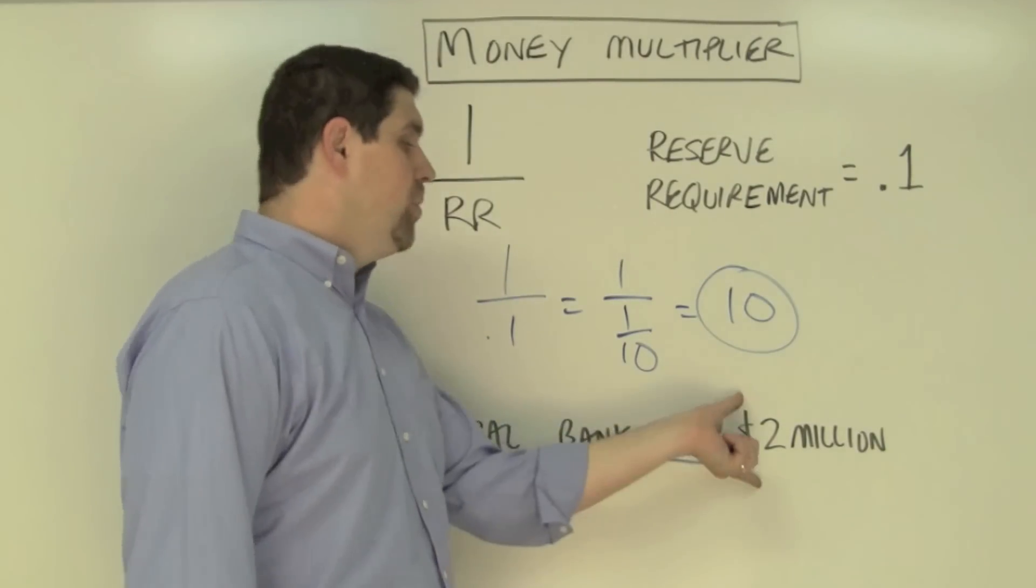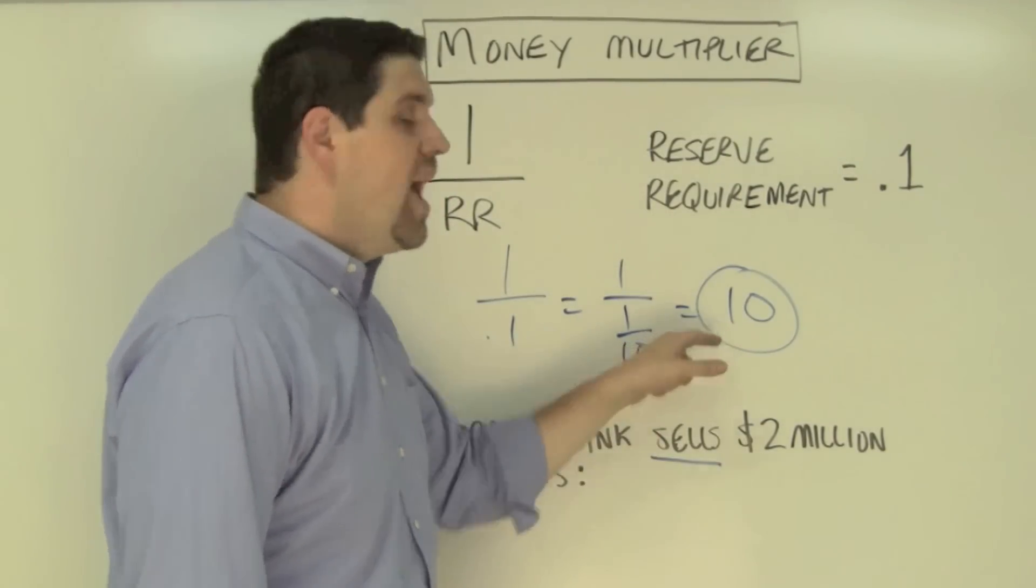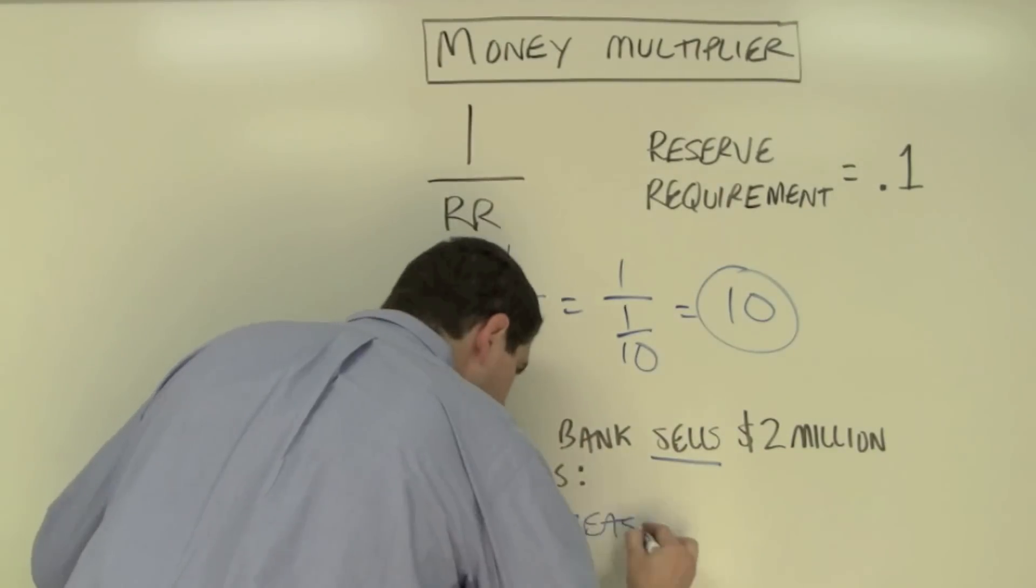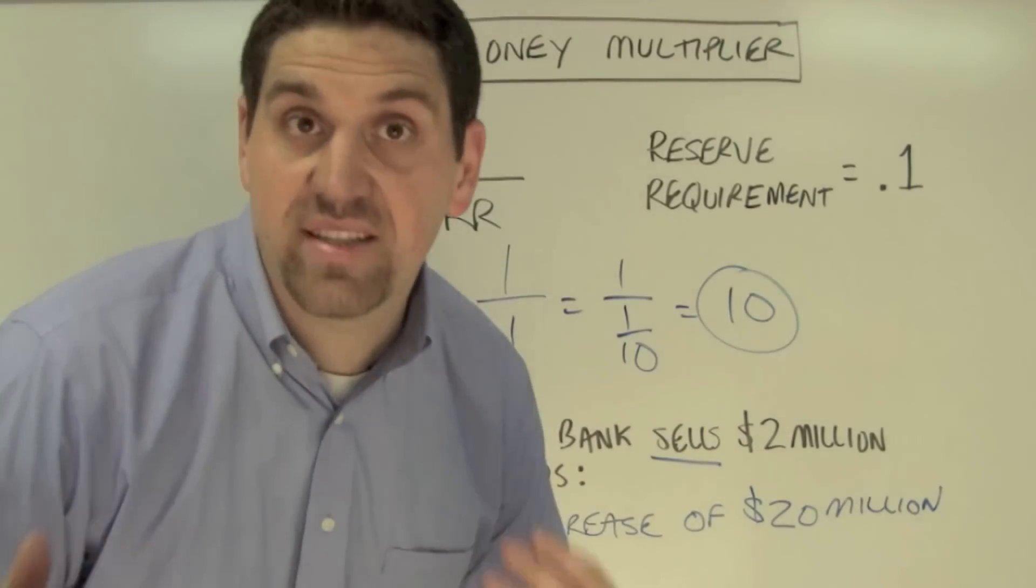So an initial decrease in money supply of $2 million will get multiplied times 10 and will decrease the total money supply by $20 million. And that's why the right answer is C.